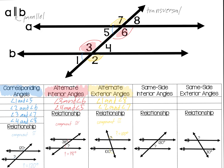Next we will look at same side interior angles. Interior means it's on the inside, like angle 4. Same side means it's on the same side of the transversal. So angle 4 is paired up with angle 6, and angle 3 is paired up with angle 5.